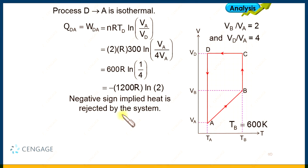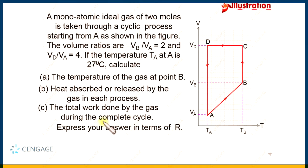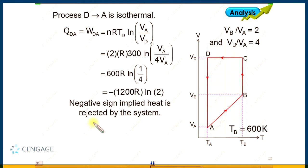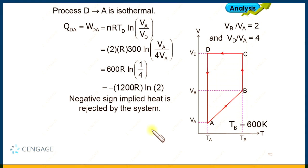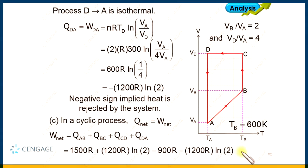Now let us consider the complete cyclic process. For a cyclic process, ΔU = 0, so by the first law Q = W. The total work done equals the sum of heat in all processes: Q_AB + Q_BC + Q_CD + Q_DA = 1500R + 1200R ln2 + (-900R) + (-1200R ln2) = 600R. So the total work done by the gas during the complete cyclic process is 600R.